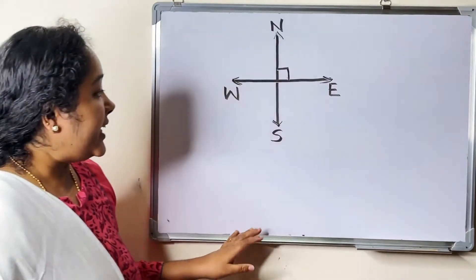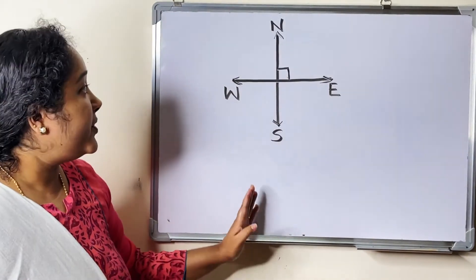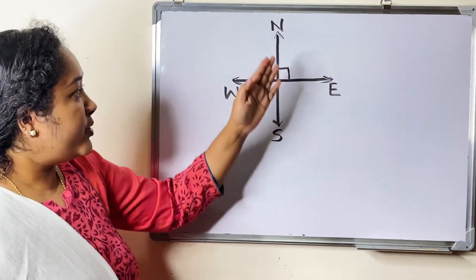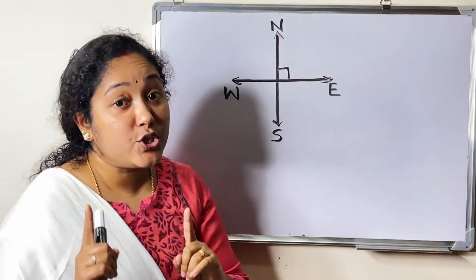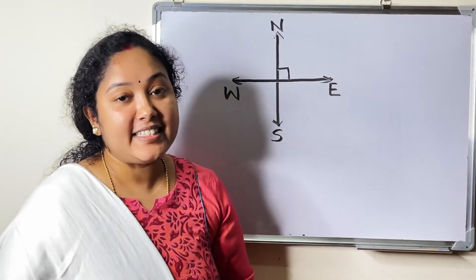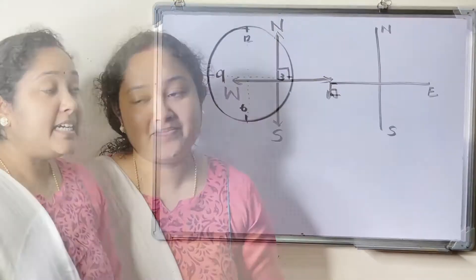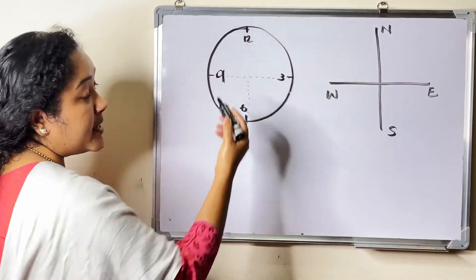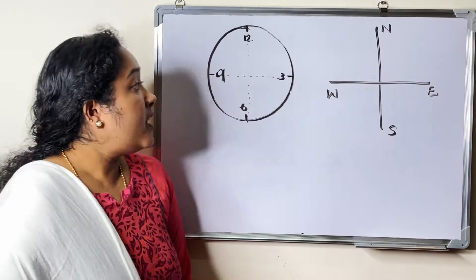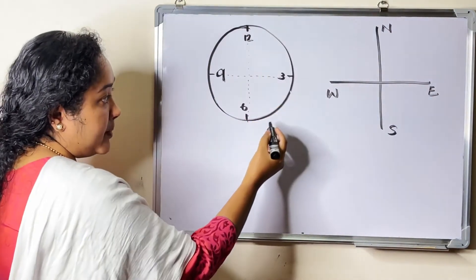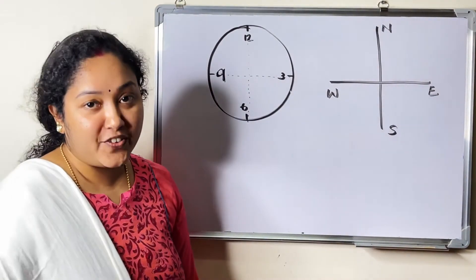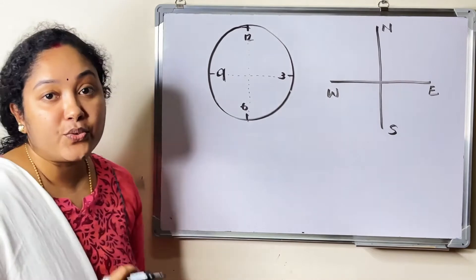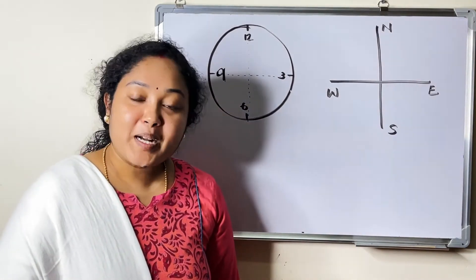Now, to take two more right angle turns, you will reach North again in the same direction — that is North to North. Or by two straight angles, this is called a complete angle. Four right angles make a full turn. This one complete turn is called one revolution. An angle in one turn or one revolution is called a complete angle.